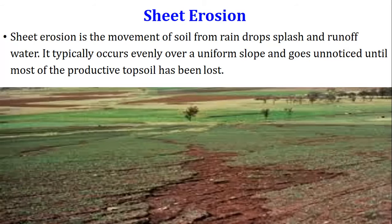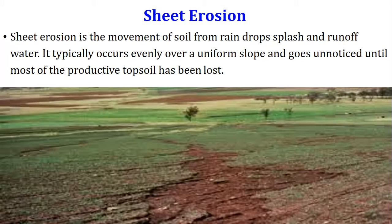This is sheet erosion. Sheet erosion is the movement of soil from raindrops, splash and runoff water. It typically occurs evenly over a uniform slope and goes unnoticed until most of the productive topsoil has been lost. Here, the upper layer of the soil is removed.